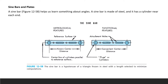Now we will look at the sine bar and plates. A sine bar looks like a bar made of steel with a cylinder near each end. The metrological functional features include an attachment hole, the center-to-center distance, and the rolls or cylinders at the end. The reference surface and known surface distance, and the center line of the cylinders, are parallel to the reference surface. The sine bar is already the hypotenuse of a triangle, frozen in steel, with a lamp selected to minimize computation. Every time you use the sine bar, you are getting the hypotenuse.